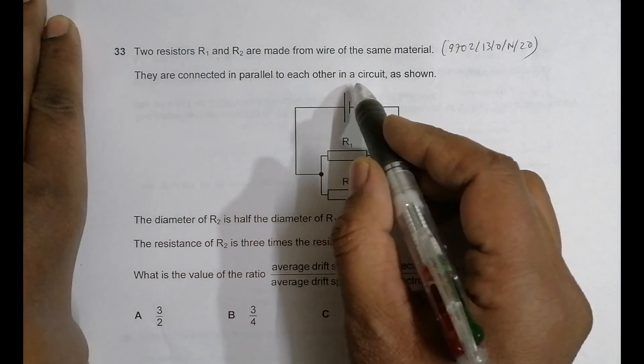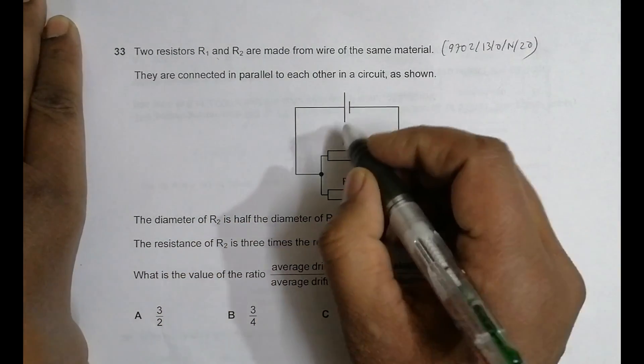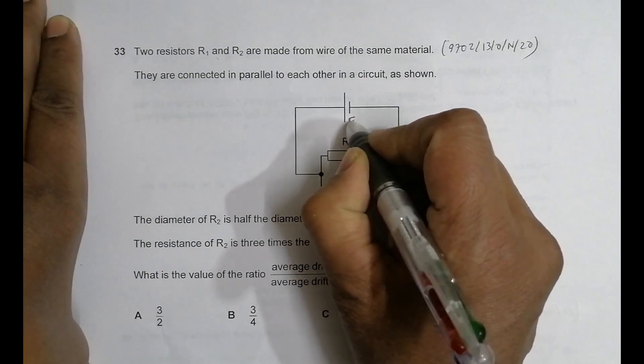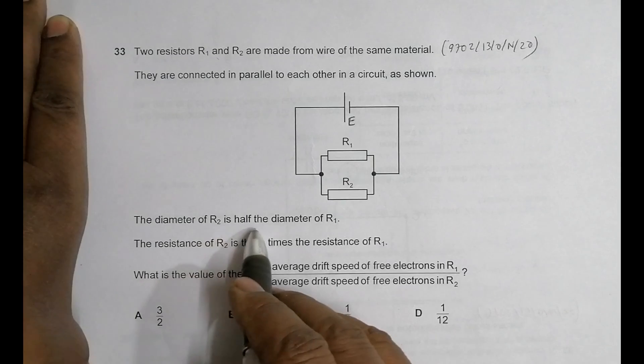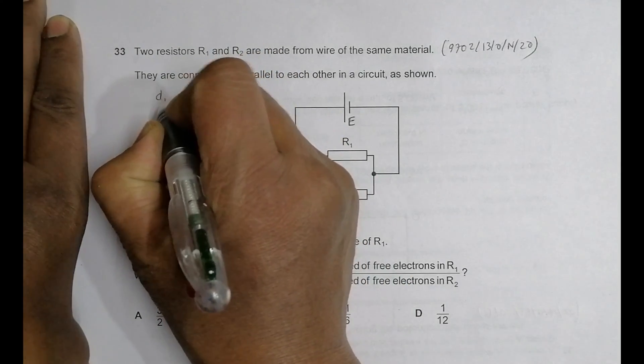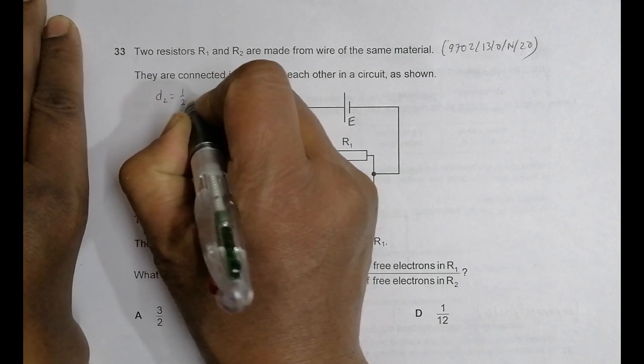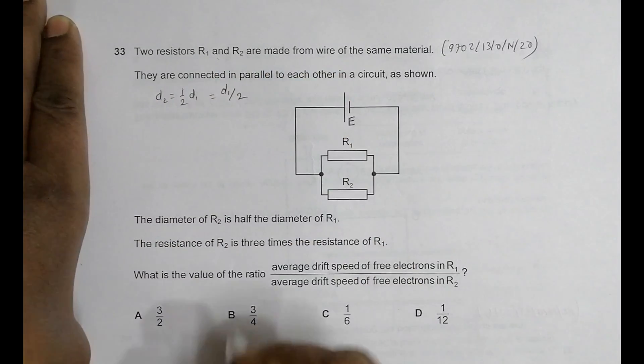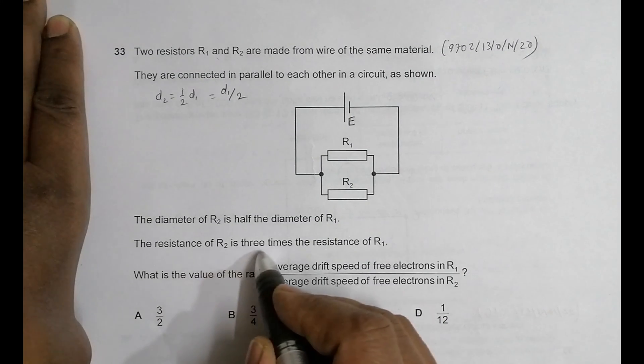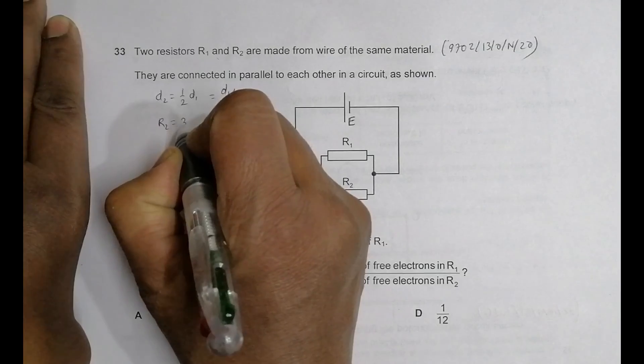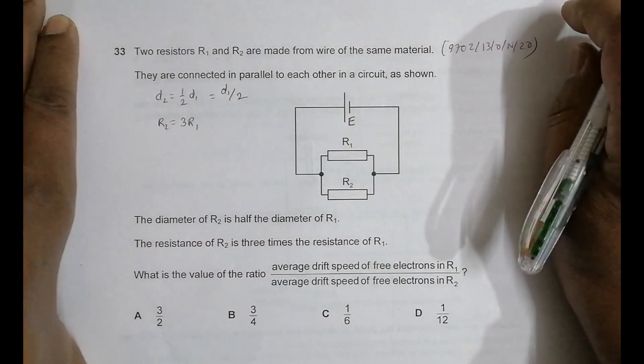They are connected in parallel to each other in a circuit as shown, so parallel across the source. The diameter of R2 is half the diameter of R1, so D2 equals D1 by 2. The resistance of R2 is three times the resistance of R1, so R2 equals 3R1.